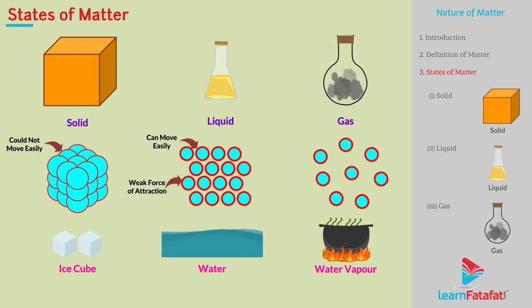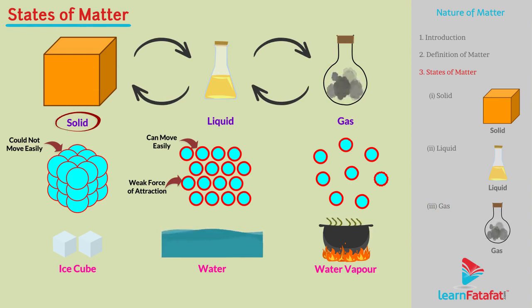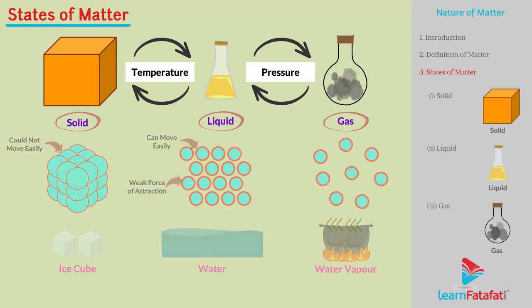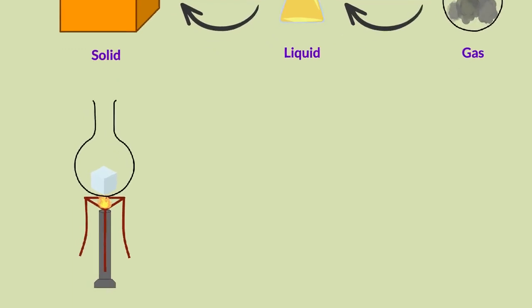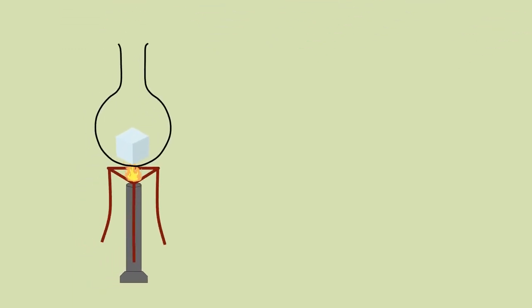The states of matter are interconvertible. That is, matter from one state can be changed to another state by changing the conditions such as temperature and pressure. For example, solids on heating usually convert to liquid state, which on further heating gets converted to gaseous state.